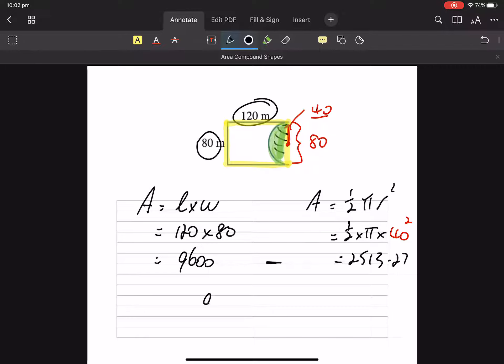So what's 9600 minus 2513? So area equals, let's hope my calculator's right, something like that. And it's metre squared.